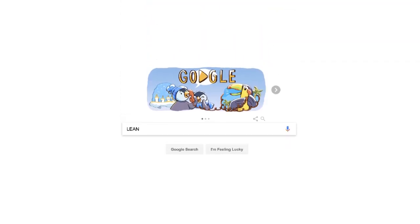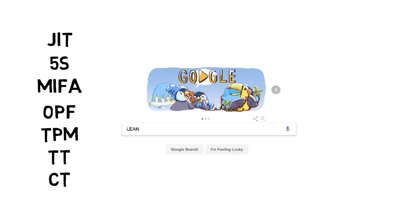If you Google Lean, things like JIT, 5S, MIFA, OPF, TPM, TT or CT start to appear on your screen.